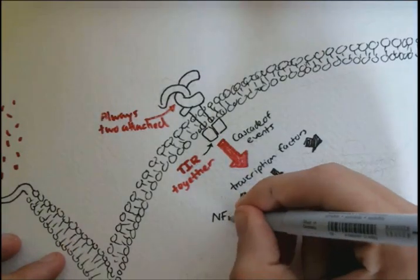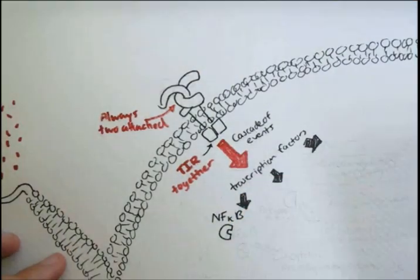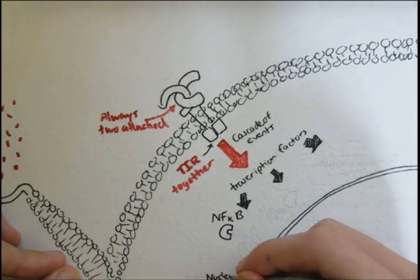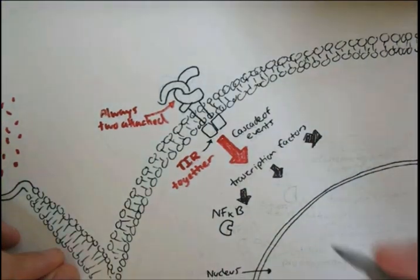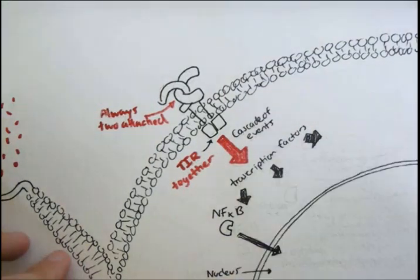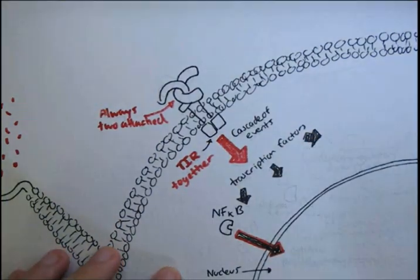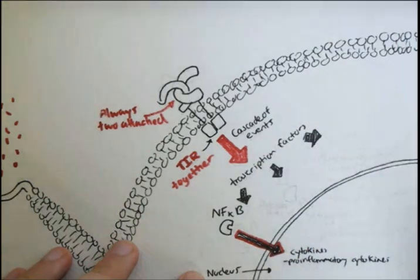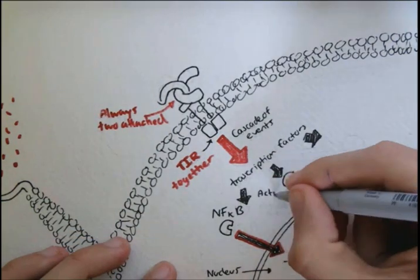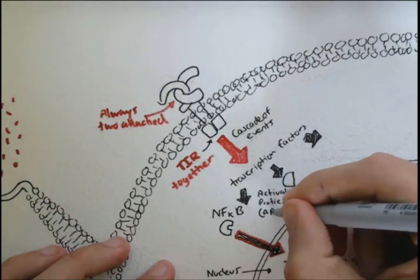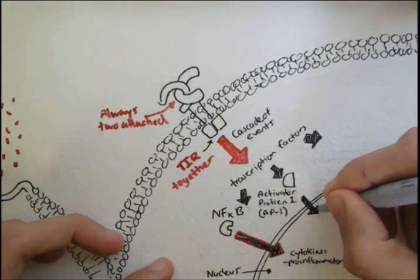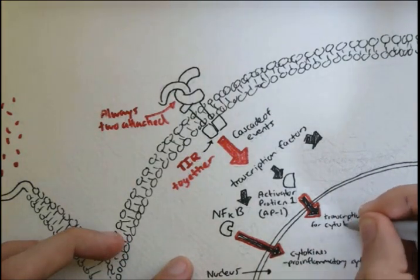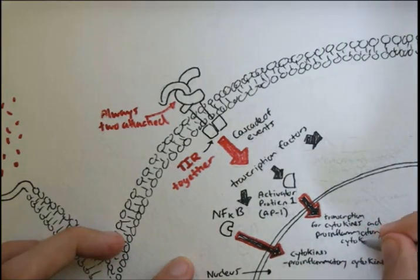So we talked about the NFKB, which then enters the nucleus of that cell and transcribes the genes for cytokines and pro-inflammatory cytokines to assist in the immune response. Well, the final product can also be an activator protein 1, or AP1, which does exactly the same thing. It transcribes the genes for cytokines and pro-inflammatory cytokines, maybe different types. And there are other activator proteins, but this is the most popular.